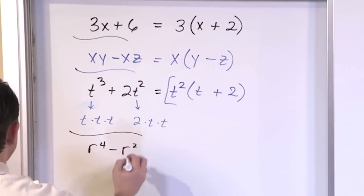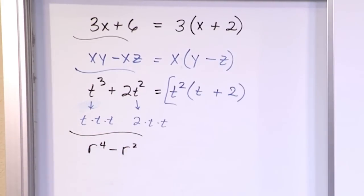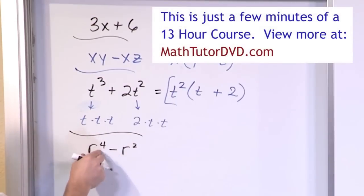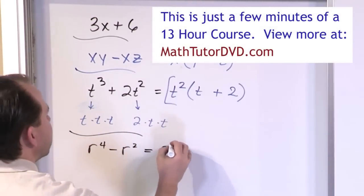So r to the fourth minus r squared. What would you factor out here? Well, we can see that there's an r here, common in both terms, but how many r's? Here we have two r's. Here I have four r's. So I know that I have at least two r's common here and I have two r's that are also common to that guy. So I can pull out an r squared.